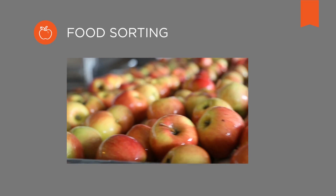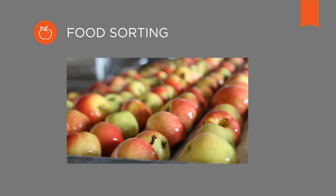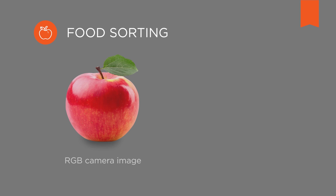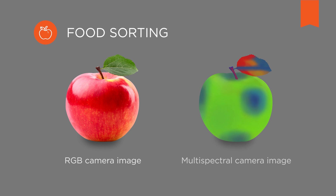Have a look at these apples, for example. Traditional RGB cameras can detect whether the apples are damaged or have red blemishes. Multispectral cameras, however, are able to detect even the slightest dent in the apple — they can see if one part of the apple is softer than others. As you can see, multispectral cameras can be used when you need more information than traditional RGB cameras can give you.